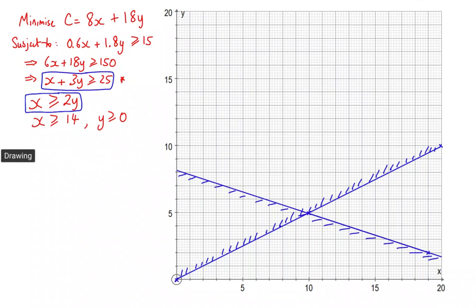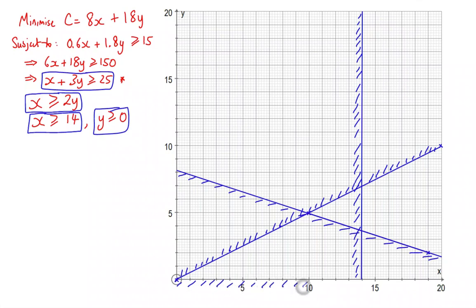Let's take a look at x is greater than or equal to 14 next. That is going to be a vertical line, like so. x equals 14. Because we want x is greater than or equal to 14, I'm going to shade the region to the left. And we've also got y is greater than or equal to 0, so we're going to shade this region here. So this is my feasible region.